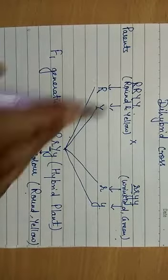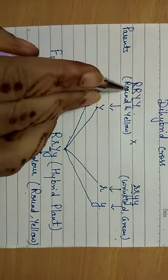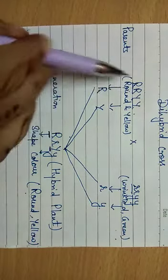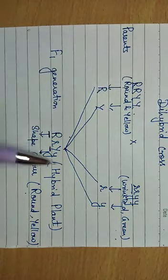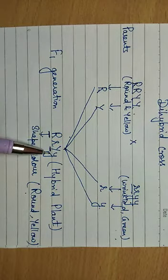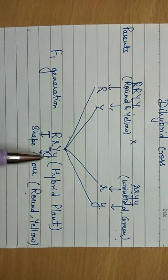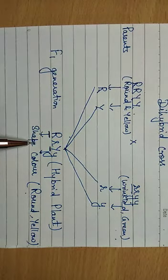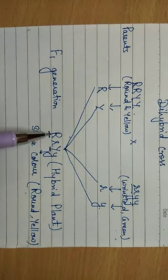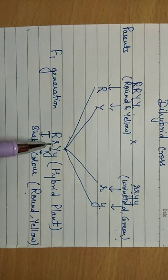It resembles the parent but the genetic constitution is different from the parent. In the parent, capital R capital R is present, but in the progeny or offspring, capital R small r is present — a hybrid condition or heterozygous condition.